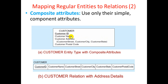For composite attributes, for example a name attribute composed of first name, last name, and middle name — we convert each component into a simple attribute column. The composite attribute itself does not become a column; instead, its component simple attributes are created as separate columns, such as customer ID and customer name.